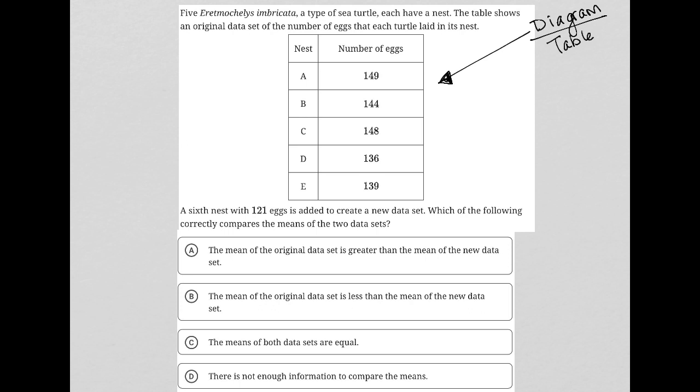It has a column here that just says nest, so we have one, two, three, four, five different nests, A through E. And then this next column is number of eggs. So I assume that means there are 149 eggs in nest A, for instance, there's 136 eggs in nest D, for instance. Let's keep reading and make sure there's no missing information from reading this table.